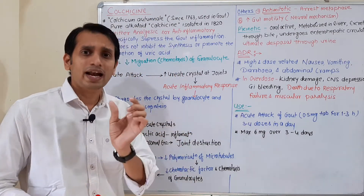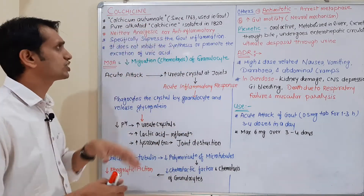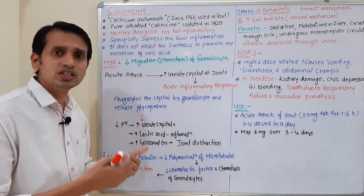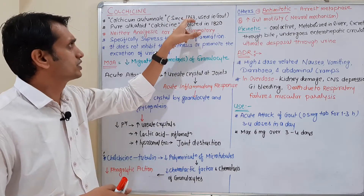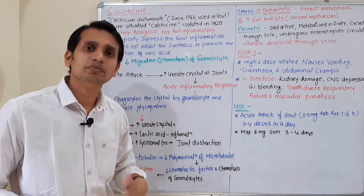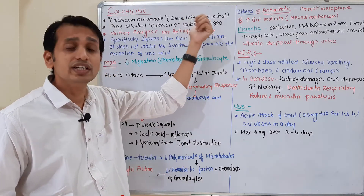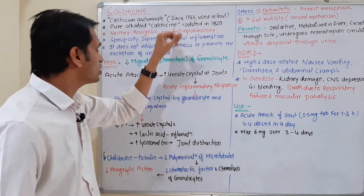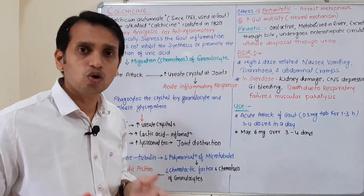Colchicine is an alkaloid obtained from a plant called Colchicum autumnale. This plant has been used in gout treatment since 1763, but the pure alkaloid colchicine was isolated in 1820. This historical point is frequently asked in exams.